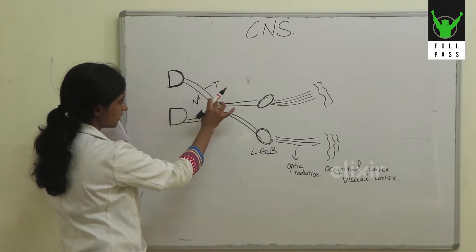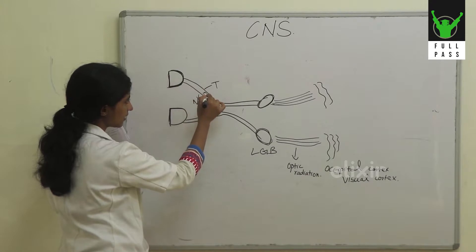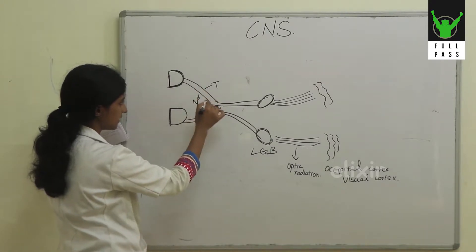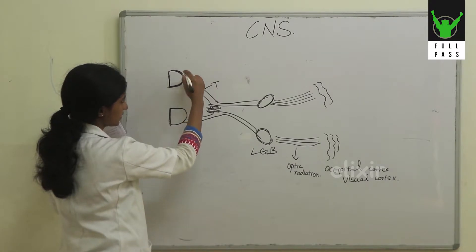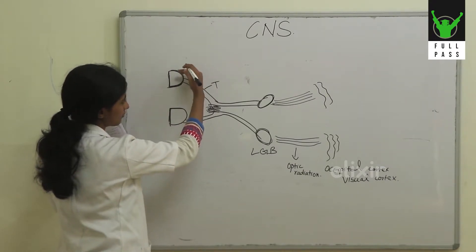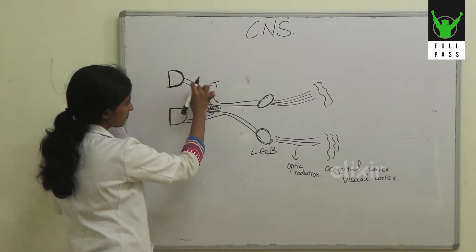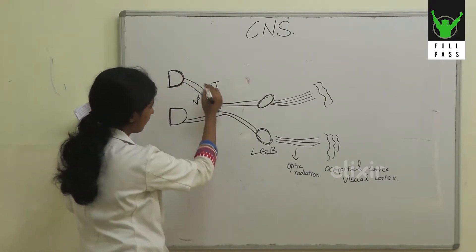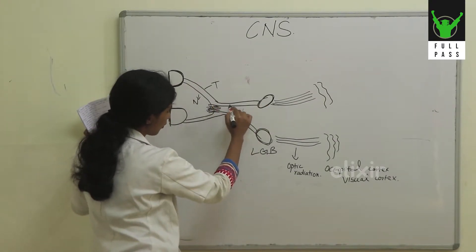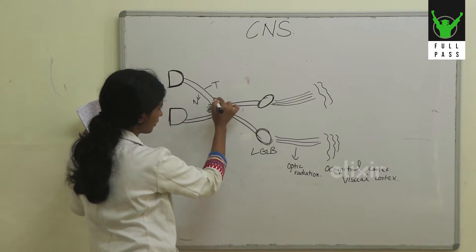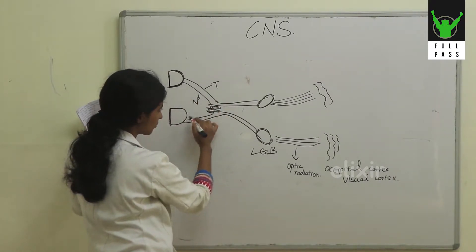If we consider this as the optic nerve, there are temporal fibres as well as nasal fibres. Temporal fibres are the fibres coming from the temporal part of the retina, and nasal fibres come from the nasal part of the retina. The temporal fibres move on to the optic tract without a crossover, but the nasal fibres do cross over.